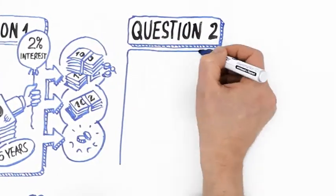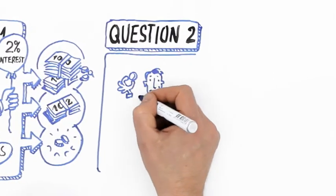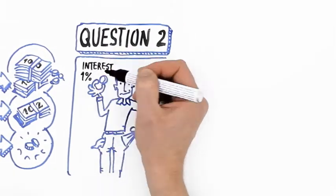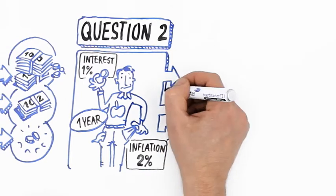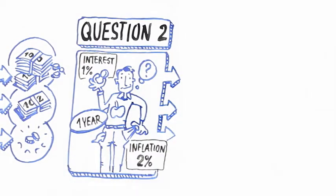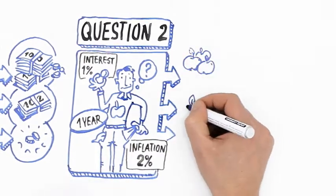Second, if the interest rate on your savings was 1% and inflation was 2%, after a year, would you be able to buy more than, less than, or exactly the same as today?